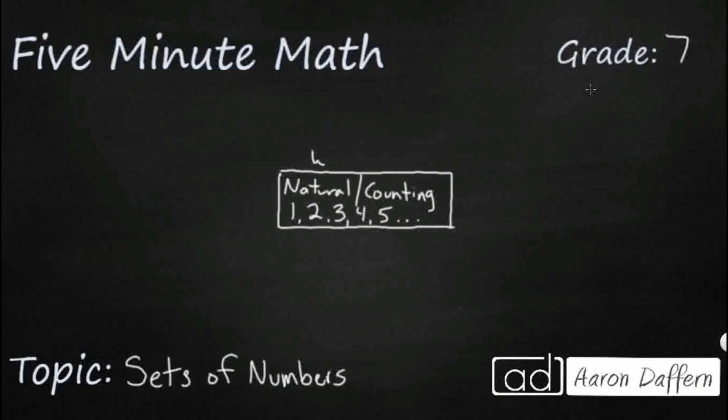Now outside of that, we have another set of numbers, and it's not that exciting. It doesn't add much. Whole numbers start with 0. That's it. That's the only difference between whole numbers and natural or counting numbers - they include that integer 0.